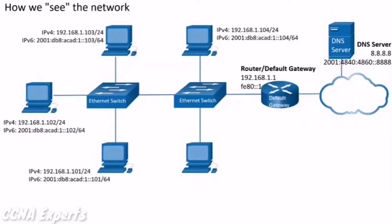This is how we see the network — using topology diagrams. We can see the devices in the network, including end devices such as desktops and servers, and intermediary devices such as switches and routers.